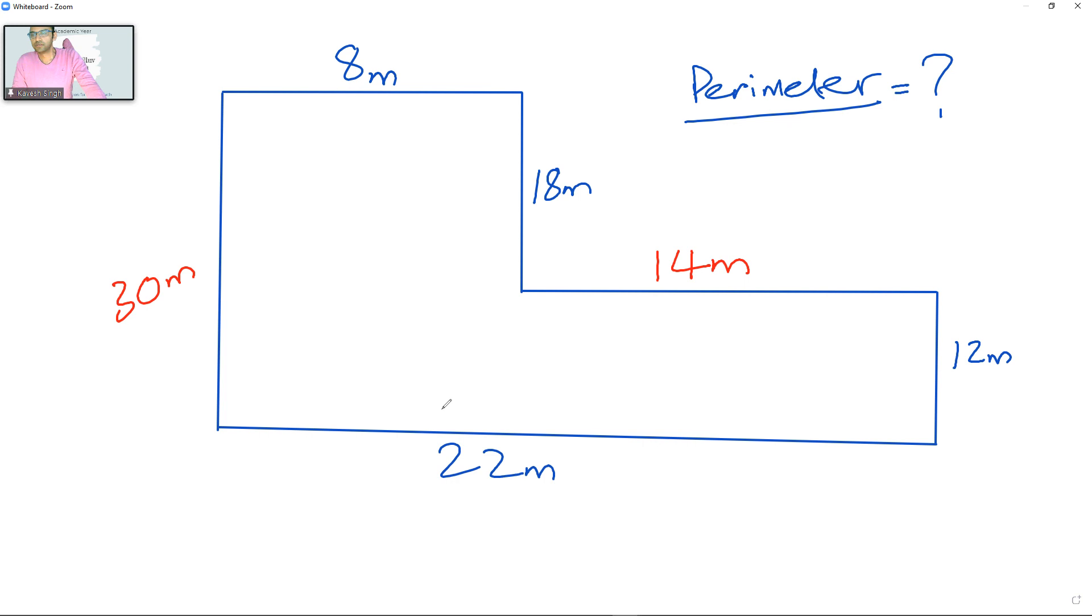My perimeter, I'm going to call it P, is going to be the sum of all the sides. So let's go: 30 meters plus 8 plus 18 plus 14 plus 12 plus 22.